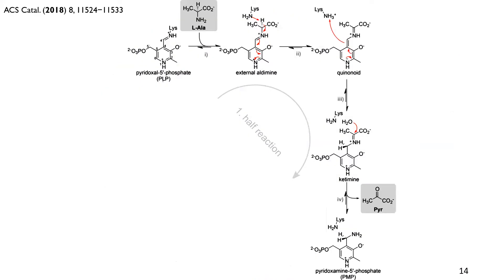Going more into the structural mechanism, we can divide the so-called ping-pong mechanism of transaminases into two different half-reactions. The first half-reaction starts with the resting pyridoxal-5-phosphate, which has a covalent bond with a lysine forming a Schiff base. Once alanine, which is our amine donor, comes into the active site, it initiates the reaction, and after a nucleophilic attack, forms an external aldimine that after deprotonation forms a planar quinonoid, and after protonation a ketimine that hydrolyzes to pyruvate and pyridoxamine phosphate.